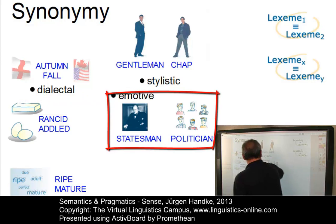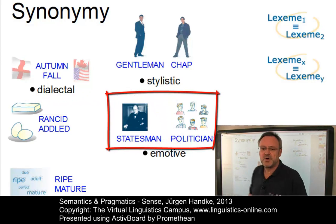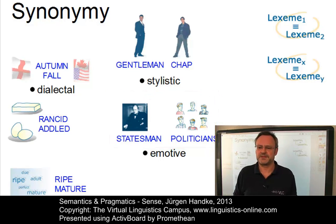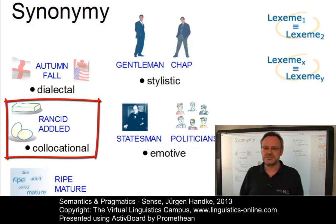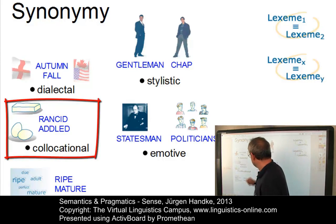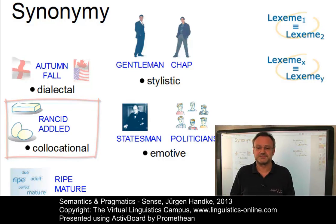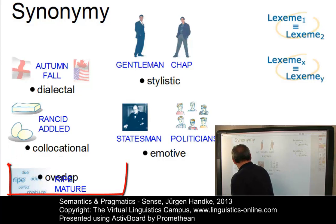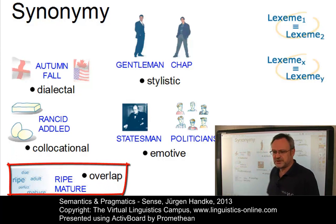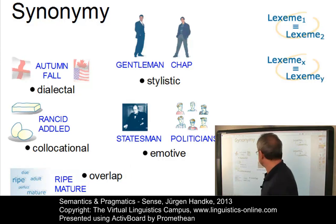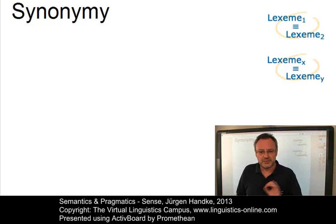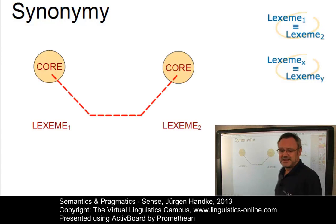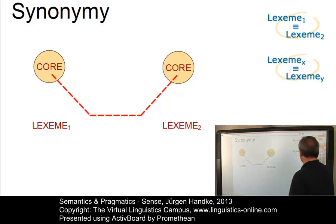Statesman and politician involve what is referred to as emotive difference — same semantic core, but their emotive extensions are different. Some lexemes also require specific contexts or collocations; they are collocational restricted. For example, you can have rancid butter and addled eggs, but not vice versa. And last but not least, we have cases of semantic overlap, such as the two adjectives ripe and mature. With these differences in mind, synonymy can best be defined as relatedness in meaning — that is, two words or lexemes have identical semantic cores but different extensions.